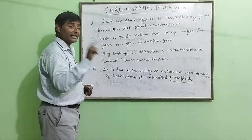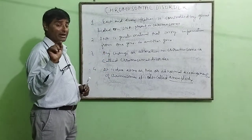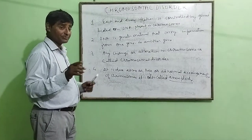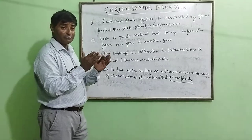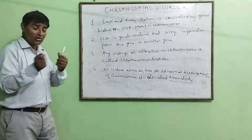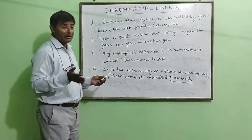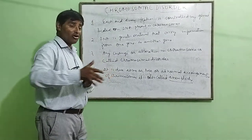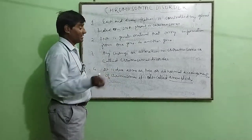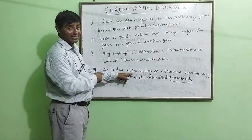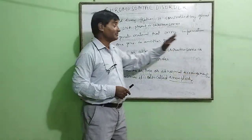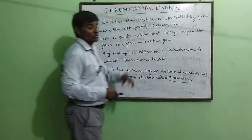Excess or loss takes place — you remember when meiosis was explained: in prophase one, leptotene, zygotene, pachytene stage, when crossing over takes place between non-sister chromosomes and complete separation does not take place, this condition arises — excess, loss, or abnormal arrangement. This is the main cause of chromosomal disorder.